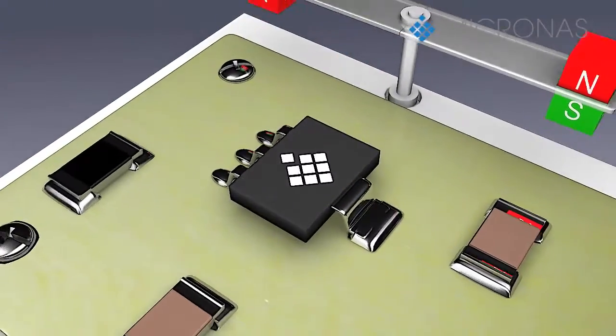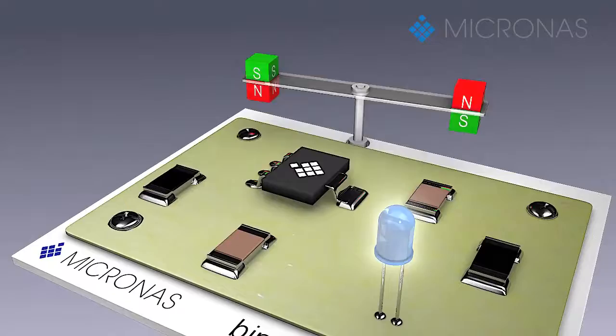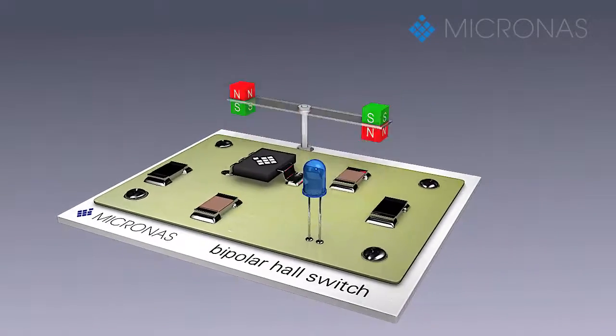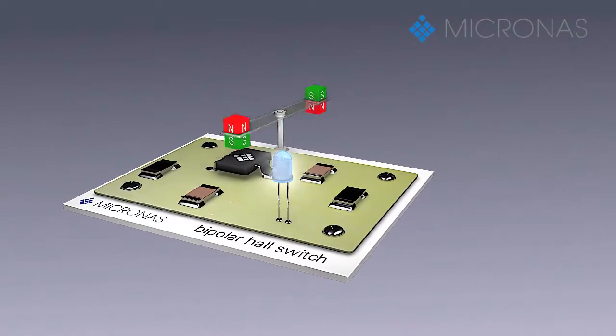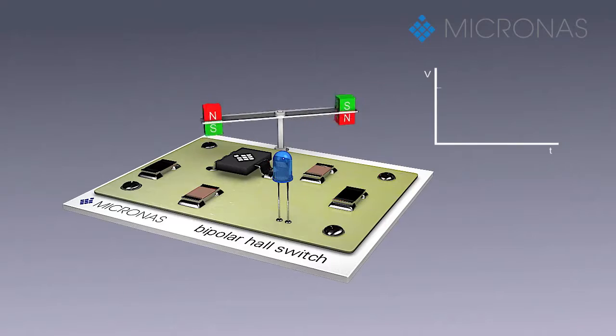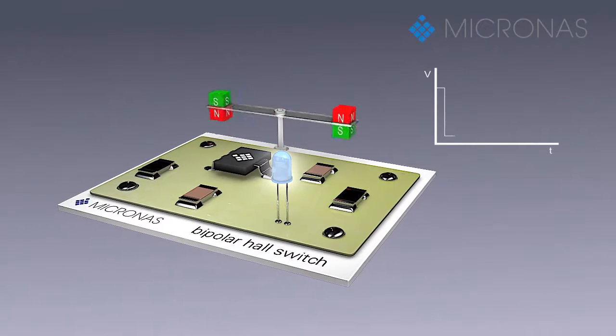The comparator compares the actual magnetic flux through the hall plate with fixed switching points. If the magnetic field strength of the south pole is higher than the specified switching level, then the output turns to low.